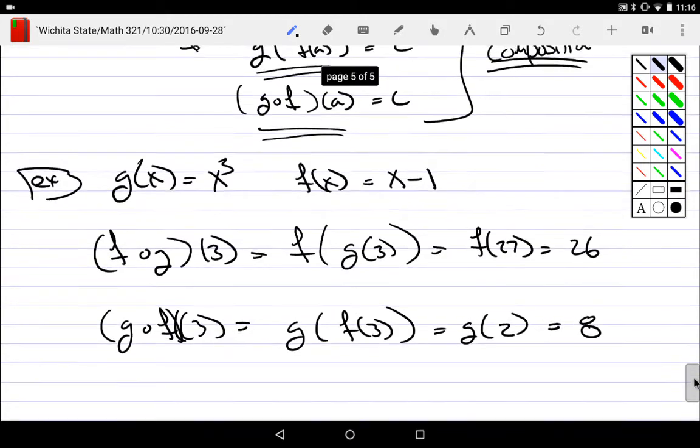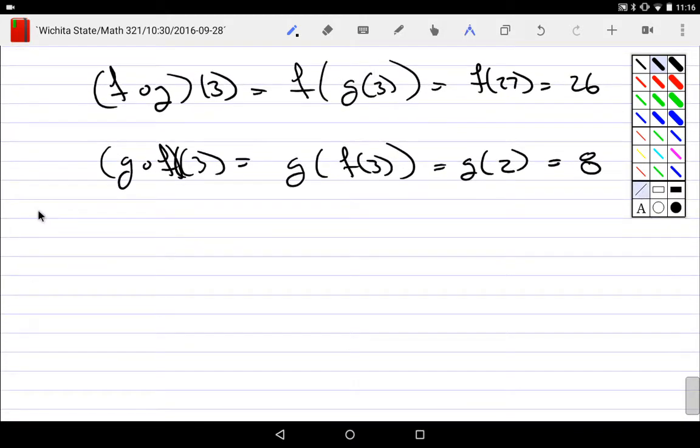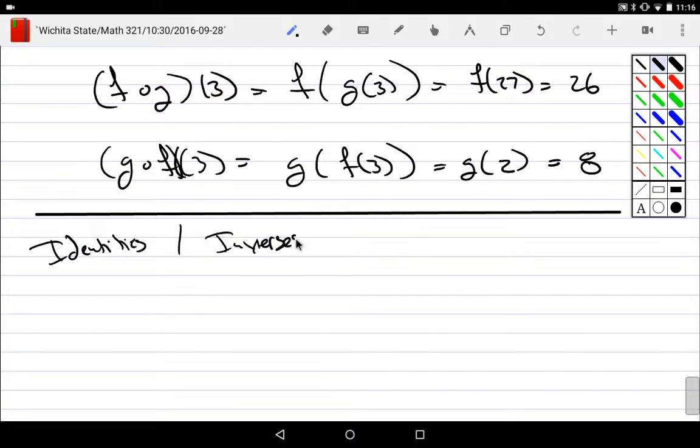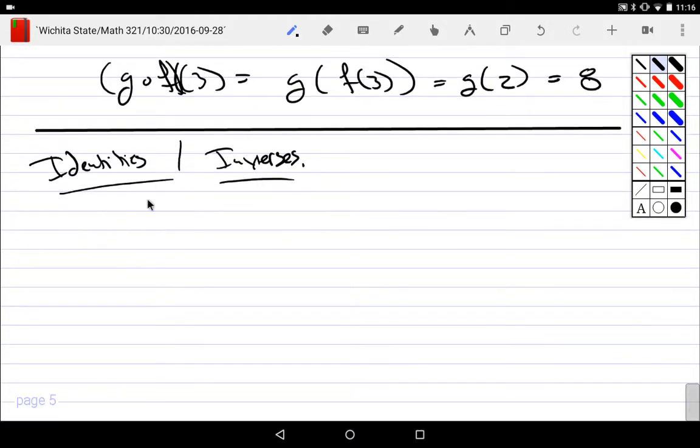All right. Now that we have our operators, in particular, we have two that are interesting to us. Let's talk about identities. Let's talk about inverses. Things that we do all the time. Again, identities and inverses have to go with an operation. So if my first operation that I talk about would be, say, F plus G. That's my plus operator. For the plus operator, who is the identity?